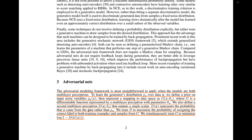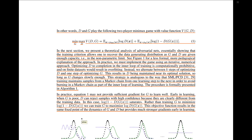We also define a second multi-layer perceptron D — the discriminator — where G is the generator. D takes in x and has parameters theta_D, and outputs a single scalar. D(x) represents the probability that x came from the data rather than pg. We train D to maximize the probability of assigning the correct label to both training examples and samples from G.